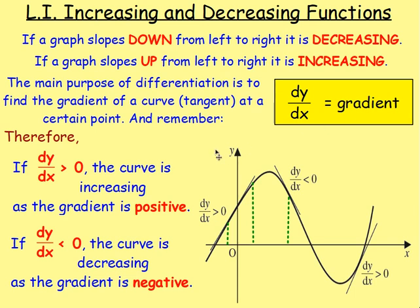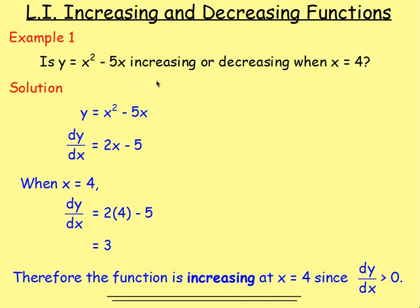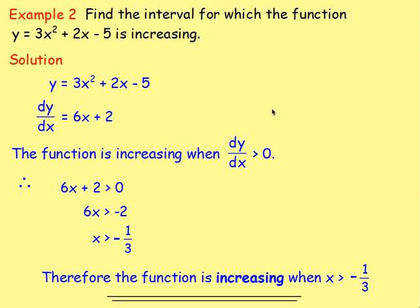Increasing and decreasing functions: if a graph slopes down from left to right, it is decreasing, meaning it will have a negative gradient. If the graph slopes up from left to right, it will be increasing and the gradient will be positive. So if you get the derivative and it's positive, the graph is increasing at that point; if it's negative, it will be decreasing. We did examples finding out if a function is increasing or decreasing when x is 4 — differentiate, replace x with 4, and the sign of the result tells you which it is. We sometimes also have to work out the interval — differentiate and set the derivative to be greater than zero to find the range of x values for which the function is increasing.